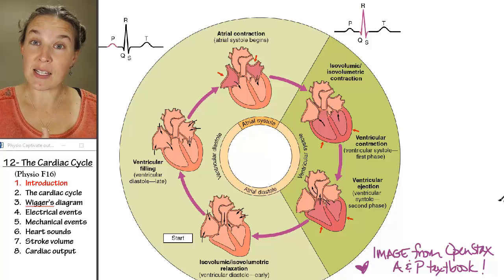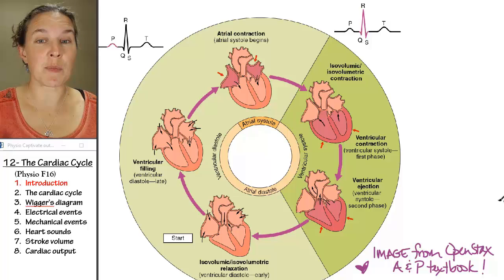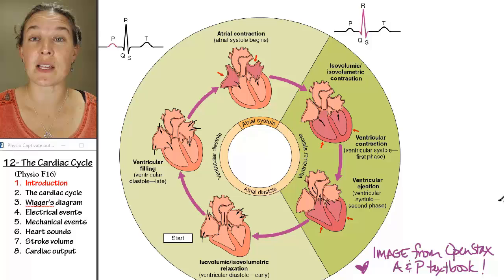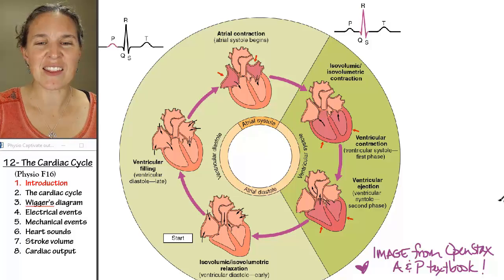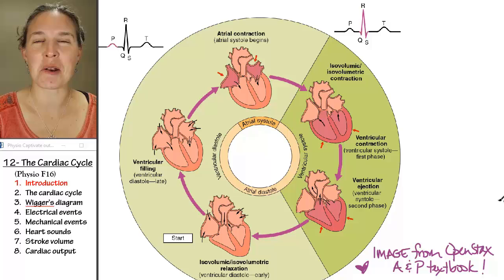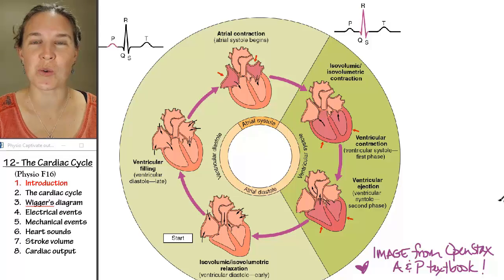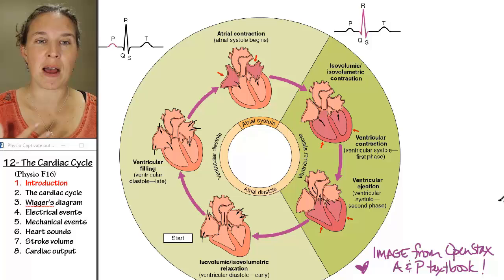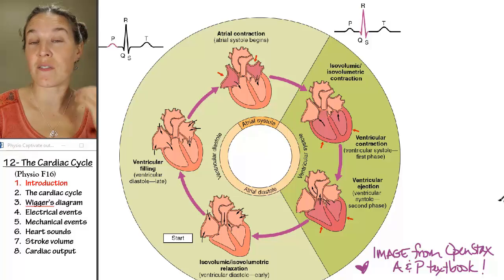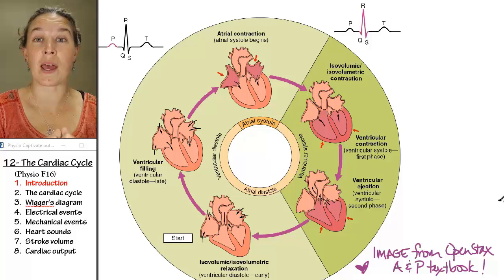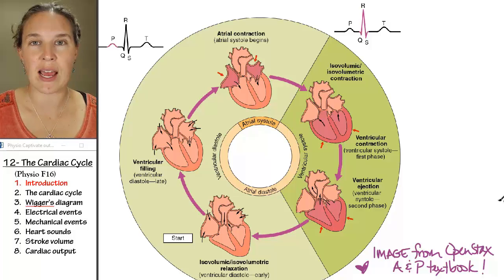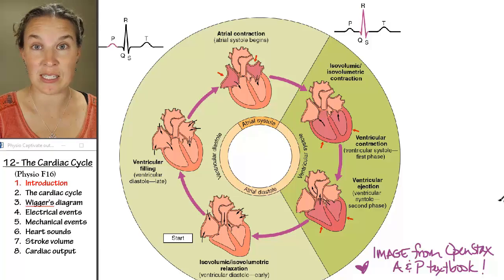We looked at the contractile cells, which really make up the bulk of the heart muscle itself — 99% of your heart muscle is made of contractile cells. And then there's this 1%, which is the auto-rhythmic cells, which are super cool. They generate their own action potentials, and thereby initiate contraction of the cardiac muscle in a rhythmic way, forever, without any neural input necessary at all.